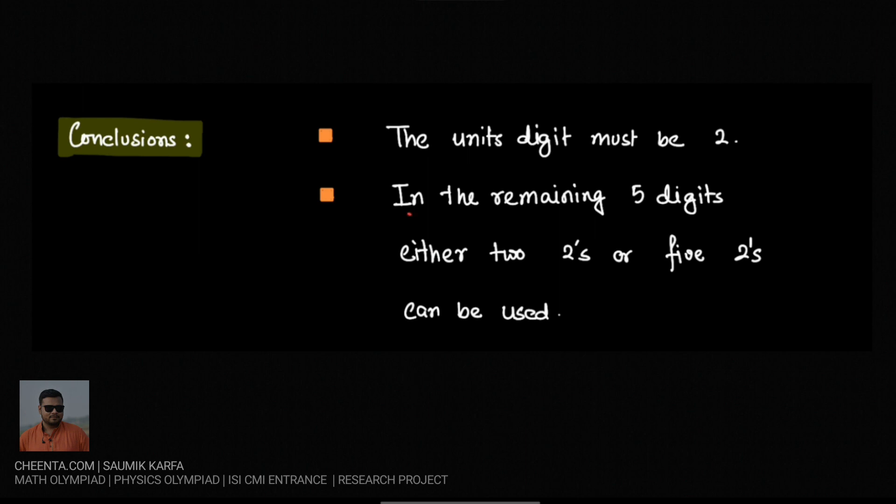Now in the remaining 5 digits - in total it was a 6 digit number - the remaining 5 digits, we can either use 2, or all 5 of them can be 2. Why? Because 3 and 9 are already multiples of 3.